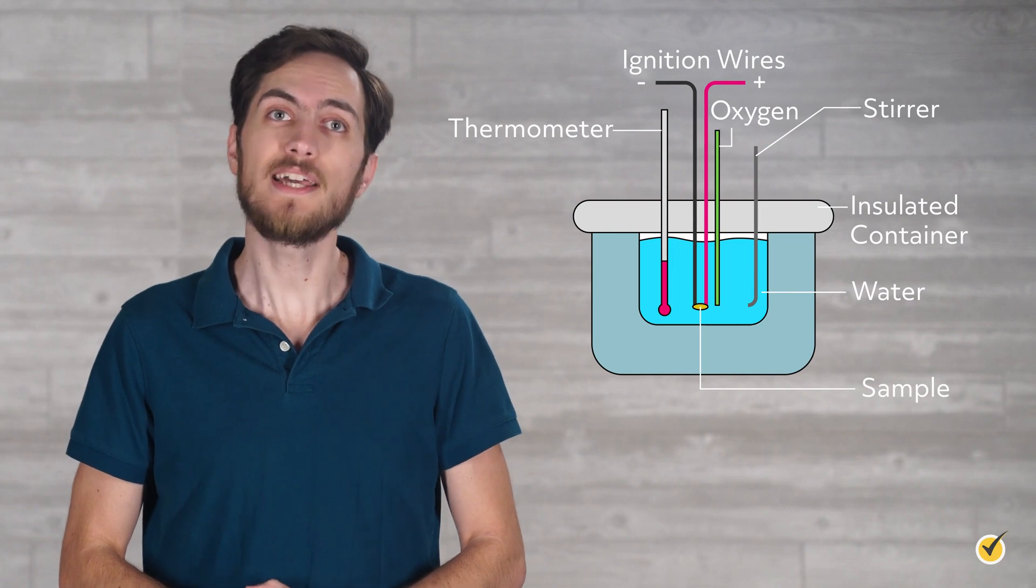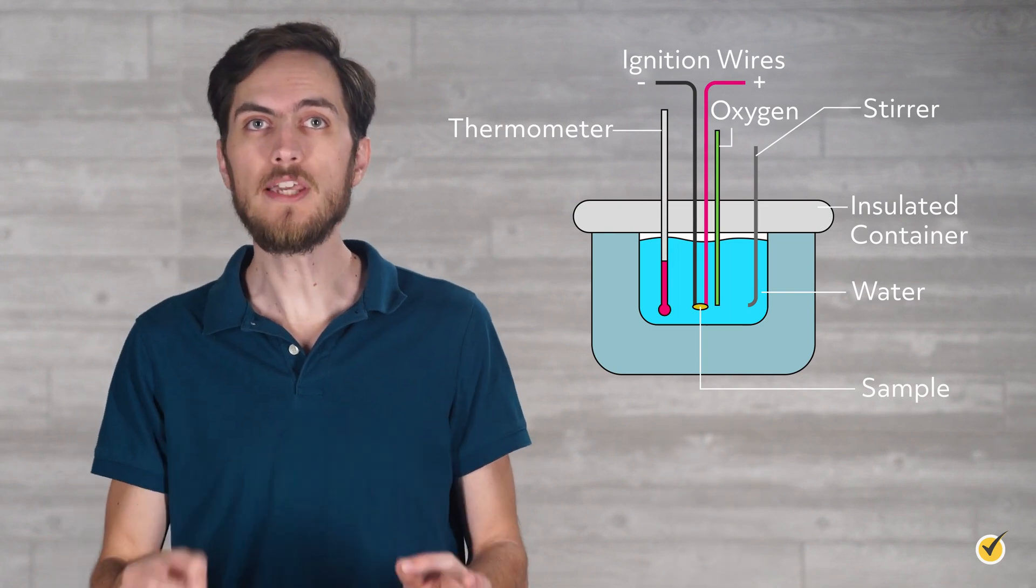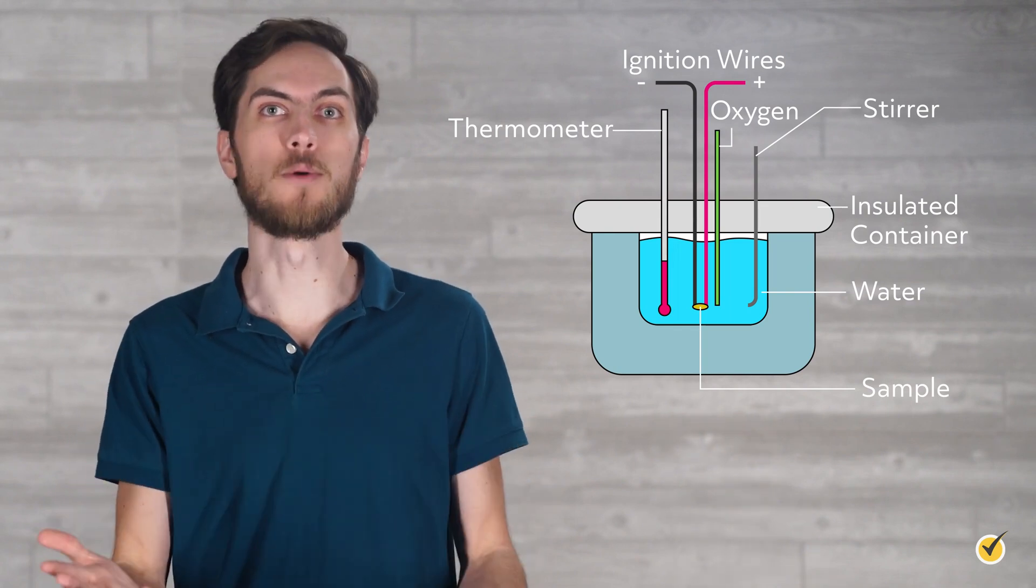As mentioned, we measure heat capacities using calorimeters. The general schematic of a calorimeter is a well-insulated vessel for which we know the heat capacity. In other words, it's calibrated.